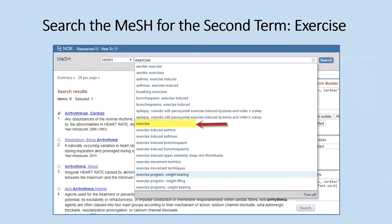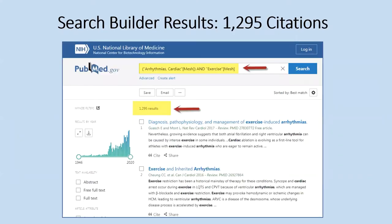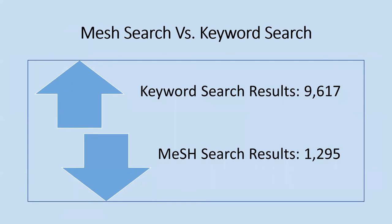Next, type in the second term: 'exercise.' Again, auto mapping activates — in this case, 24 words started with 'exercise.' Choose the first one, put a check in the box, and add it to the search builder. Then run the search, which found 1,295 citations. Comparing that to the keyword search, which had 9,617 results, you can see the MeSH search is more exact and gives fewer, more targeted results.